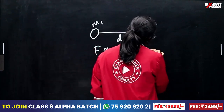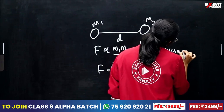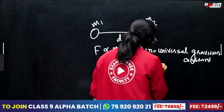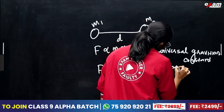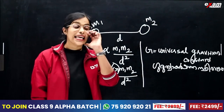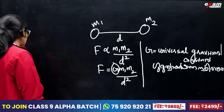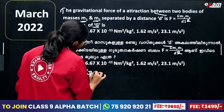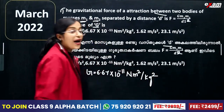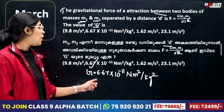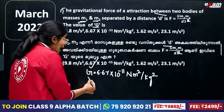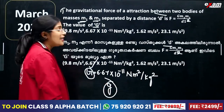Capital G is the Universal Gravitational Constant, also called Gurutwakarshana sthirangam. The value of G is 6.67 into 10 raise to minus 11 Nm² per kilogram squared. Note that G is the gravitational constant, while small g is the acceleration due to gravity.